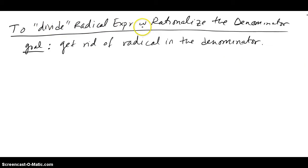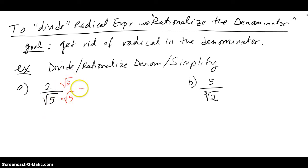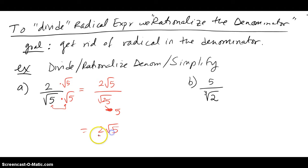To divide radical expressions, we rationalize the denominator — the goal is to get rid of the radical in the denominator, because if there is one, it's not considered simplified. For example: to simplify 2/√5, multiply numerator and denominator by √5. That gives √25 in the denominator, which pops out a nice 5. So I have 2√5 over 5, and I'm done.